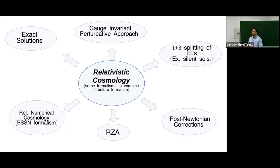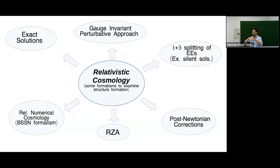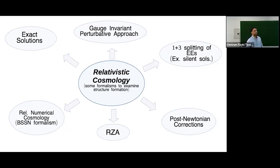From a theoretical standpoint, we wonder how to obtain that homogeneous background without assuming it. It could come from an averaging procedure, but in cosmological perturbation theory the background is put in by hand. Structures forming and evolving on that background cannot back-react on it, because the background is one of the assumptions — there is a hierarchical structure where perturbations cannot affect the background.